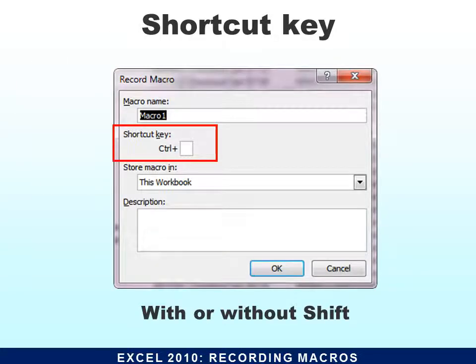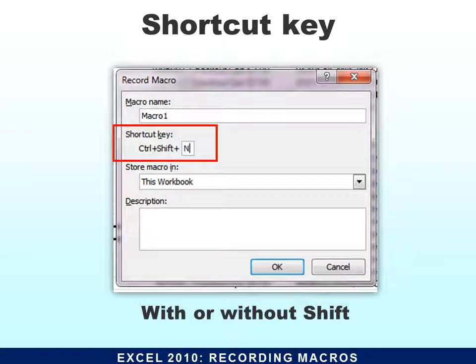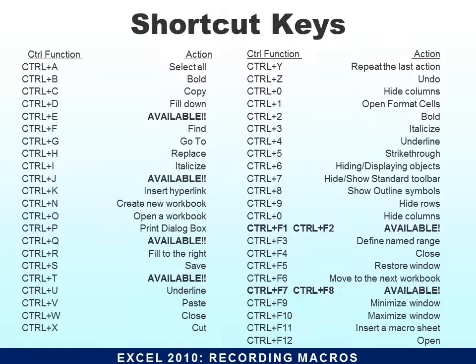Then it asks what shortcut key you'd like. You don't necessarily want a shortcut key for every macro because there's not a lot of options. You may want to run one general macro that runs all the other macros on a shortcut key. You can add Shift to make it Control-Shift uppercase. These are shortcut keys already assigned and you wouldn't want to overwrite them. Control-E is available in Excel to use as a macro. My favorite is Control-Q because it's right next to one and you usually think of Q as quick.